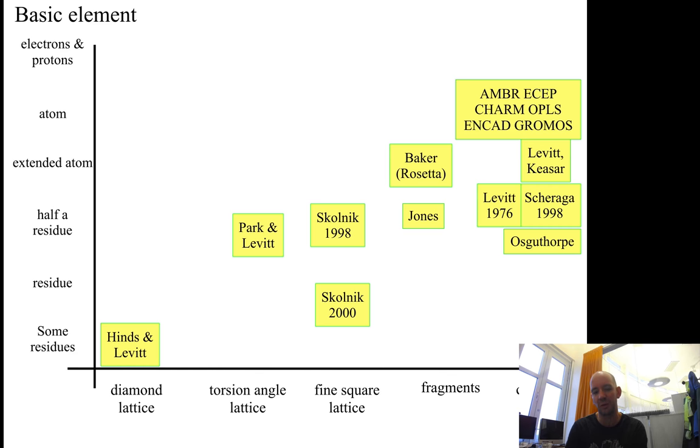Lattice models basically reduce the space to fixed points in the three-dimensional coordinates. So you have just a square lattice where you can go up and down, but you also have lattices with other dimensions—diamond lattices and more detailed lattices.